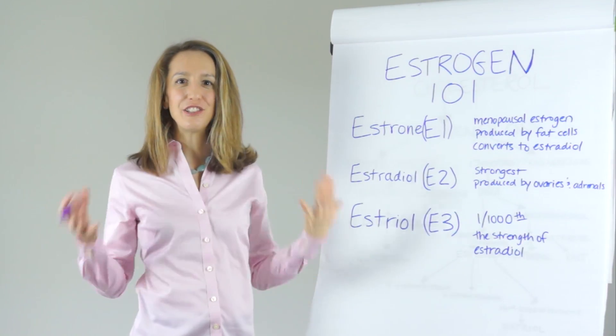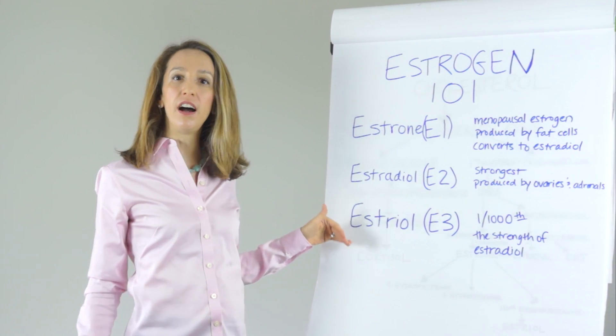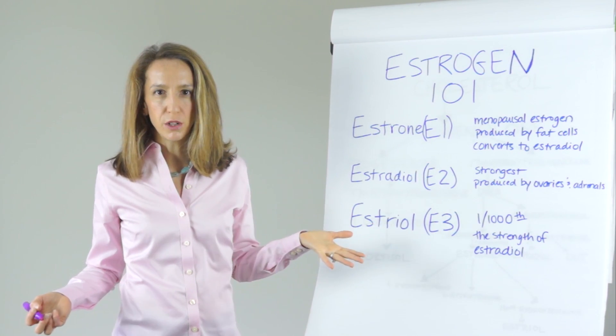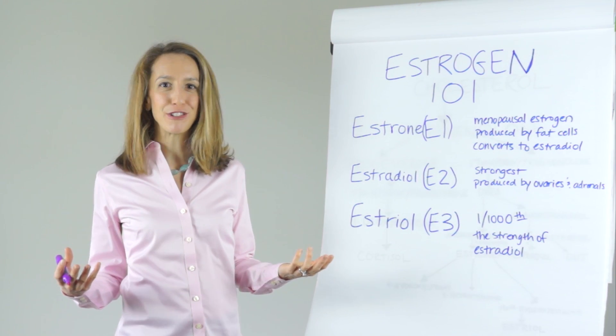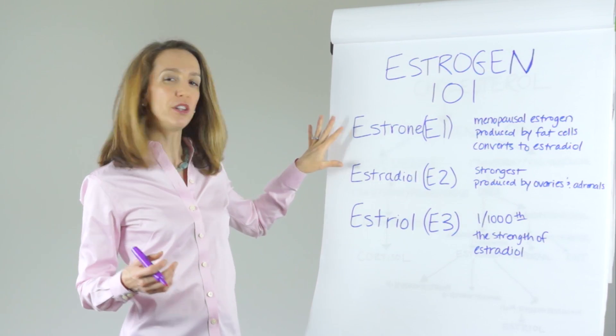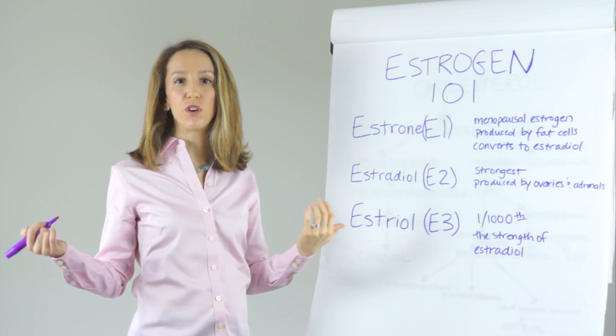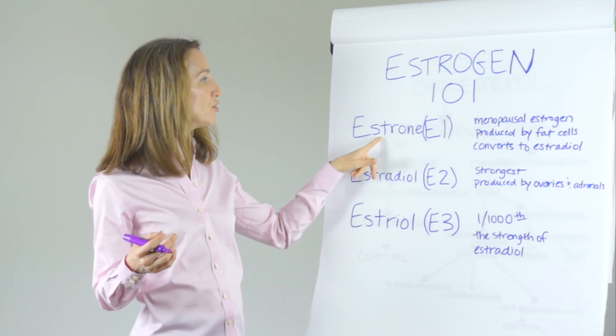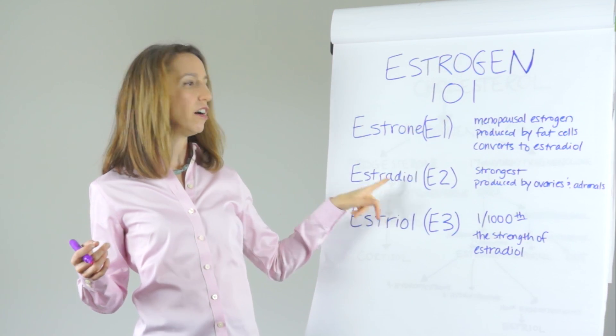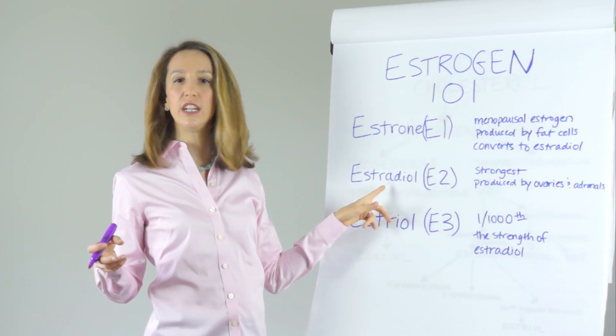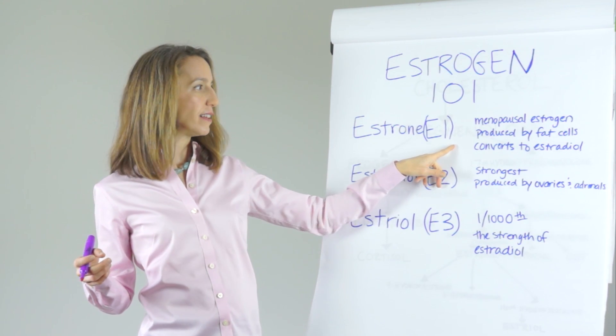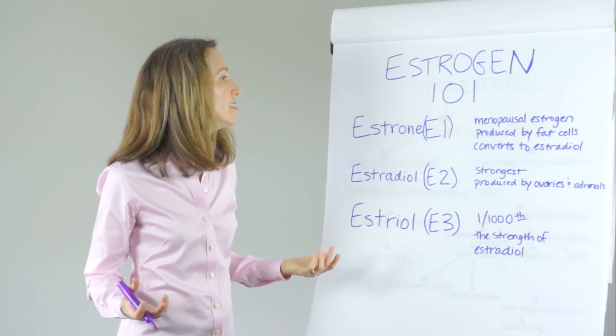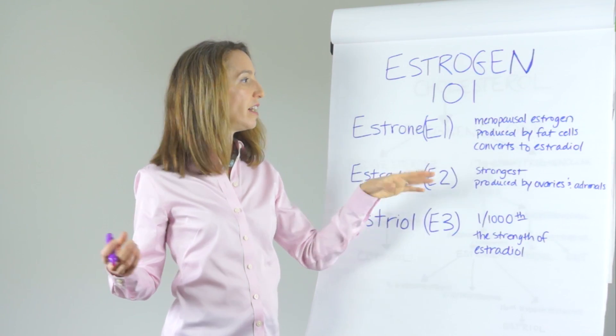So today we're talking estrogen. Let's start with estrogen 101. There are three main kinds of estrogen in the body. Estradiol is the strongest, the estrogen you have when you're in your menstrual cycling years. Estrone is a similar compound - estrogen and estrone convert back and forth all the time. Estradiol is E2, estrone is E1. Estrone is the estrogen of menopause, produced mostly by fat cells. Estradiol is the estrogen when you're cycling, produced by ovaries and adrenals.